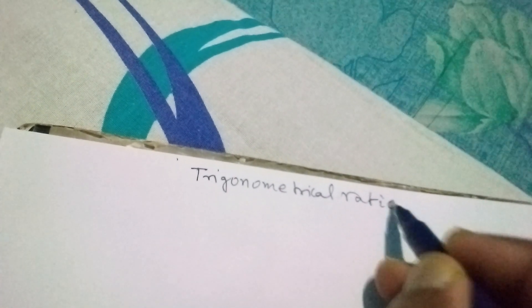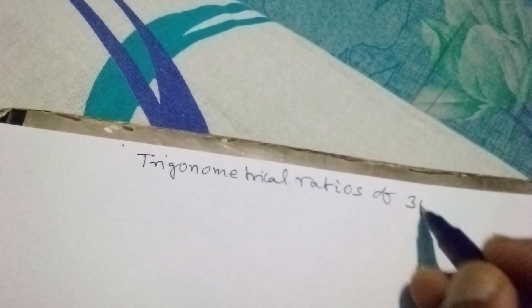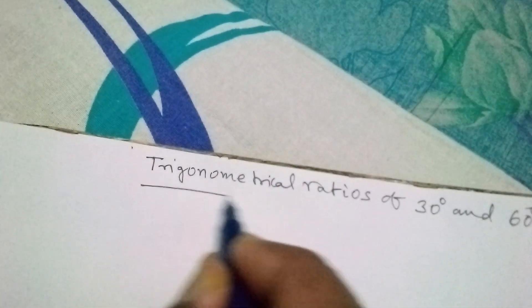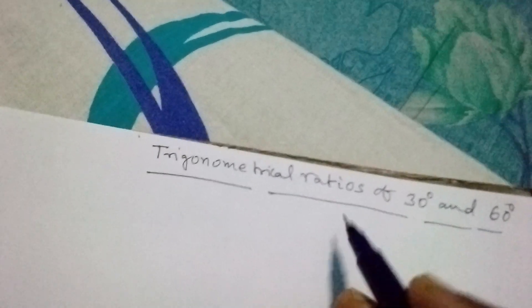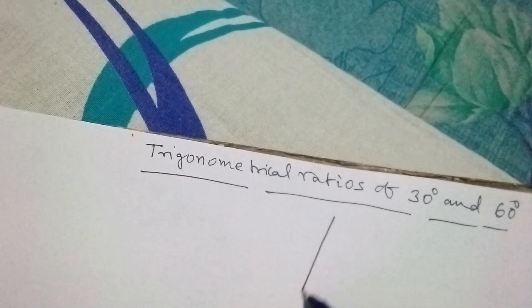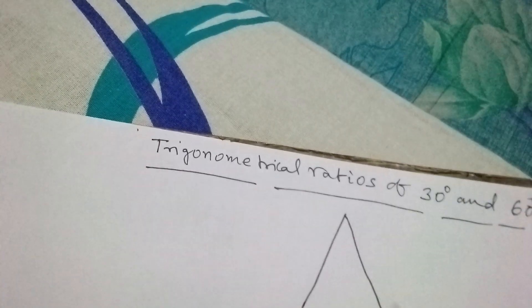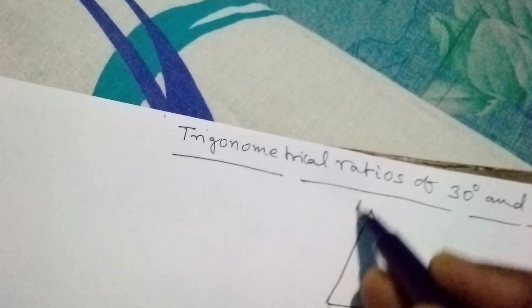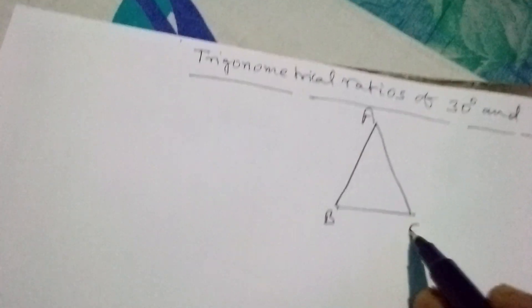Dear students, today I am going to explain the values of trigonometrical ratios of acute angles — specifically trigonometrical ratios of 30 degrees and 60 degrees, meaning how to find the values of these. For this, we take one equilateral triangle ABC.